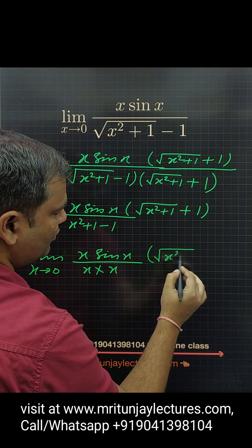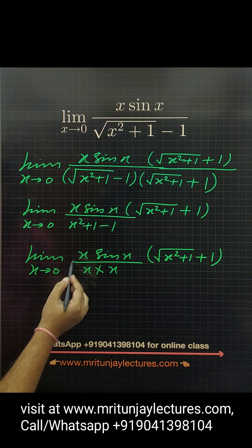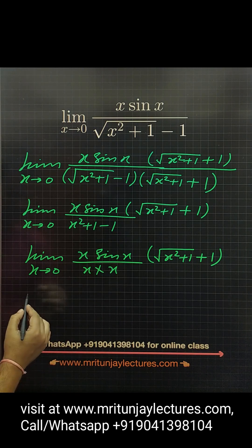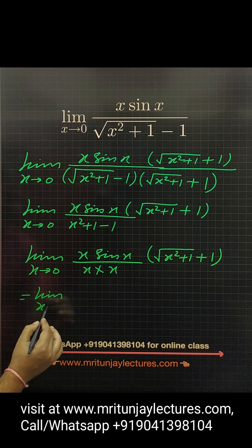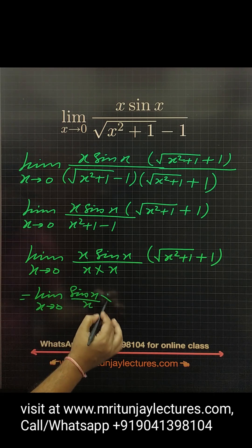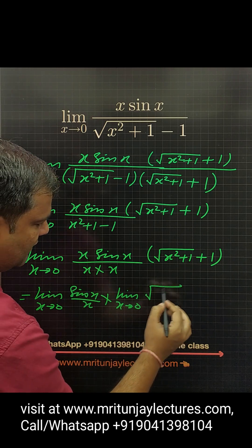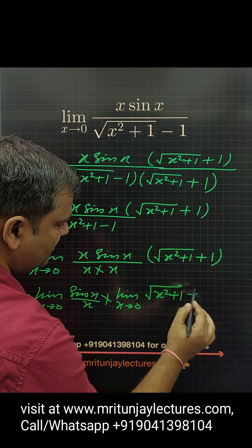Now one x is cancelled, so sine x upon x simply limit x tends to 0, sine x upon x into limit x tends to 0, under root x square plus 1 plus 1.